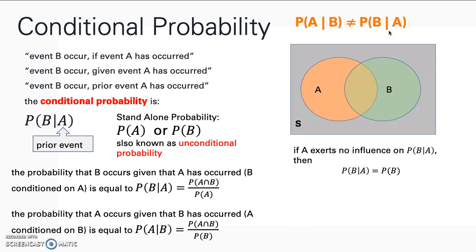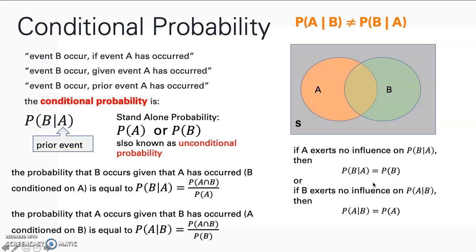In most instances, P(A|B) is not equal to P(B|A). However, if A exerts no influence on B, then P(B|A) is just equal to P(B). And if B does not affect A, then P(A|B) is just equal to P(A). This is an independent event. If the prior event has no effect on the next event, it is an independent event; but if the prior event does have an effect, then it is a conditional probability.